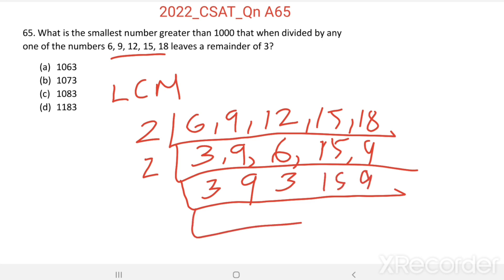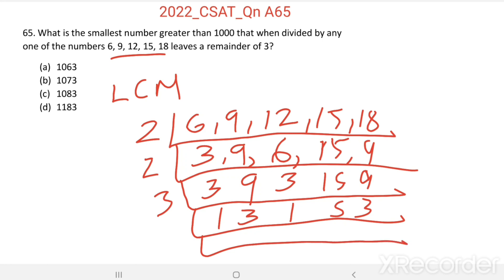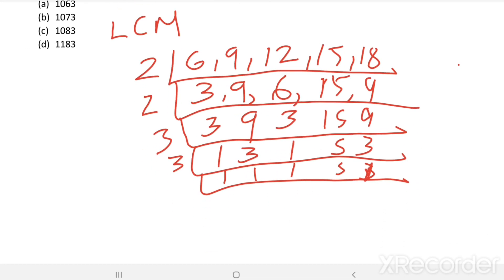We can find the least common multiple by prime factorization. Dividing 6, 9, 12, 15, and 18 step by step: first by 2, then by 3, then by 3 again, then by 5. The LCM equals the product of all prime factors.